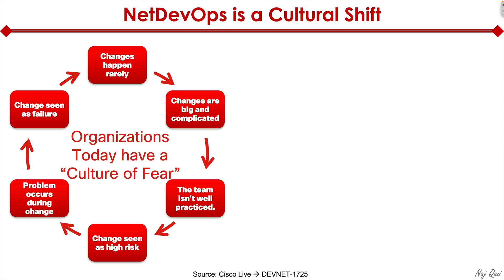Organizations today have a culture of fear. Changes happen rarely in the network. Changes are big and complicated. Teams aren't well prepared and practiced to handle changes. Changes are seen as high risk, and problems occur as changes are introduced — think all the weekends and late nights after business hours that engineers spend pushing changes. Changes are seen as failure, so if you're a traditional network engineer making a ton of changes every year, you're going to get dinged on your annual review and most likely fired, because changes are considered bad in the legacy network engineering mindset.